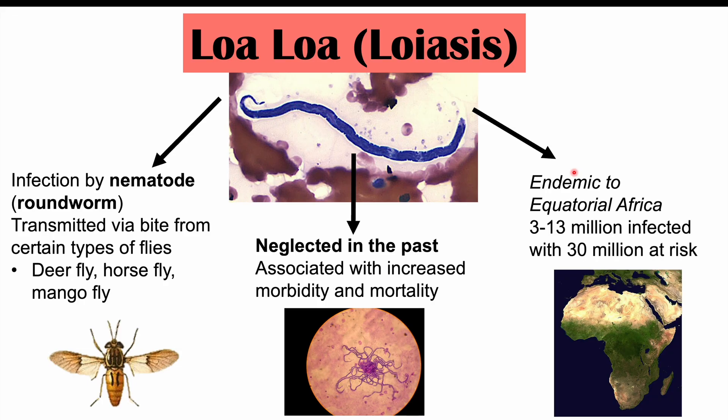This particular parasitic worm is endemic to equatorial Africa, mostly central Africa. We see it in places like Angola, Cameroon, Nigeria, Democratic Republic of Congo, South Sudan, and Chad. Three to 13 million people are infected with this particular parasitic worm, and there are upwards of 30 million people at risk.